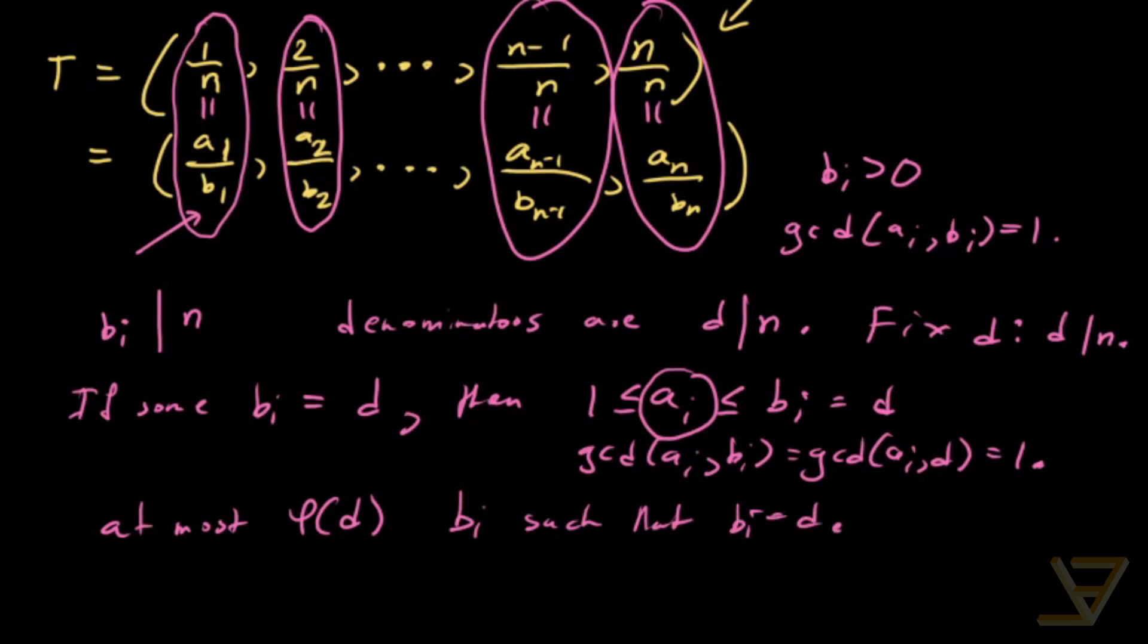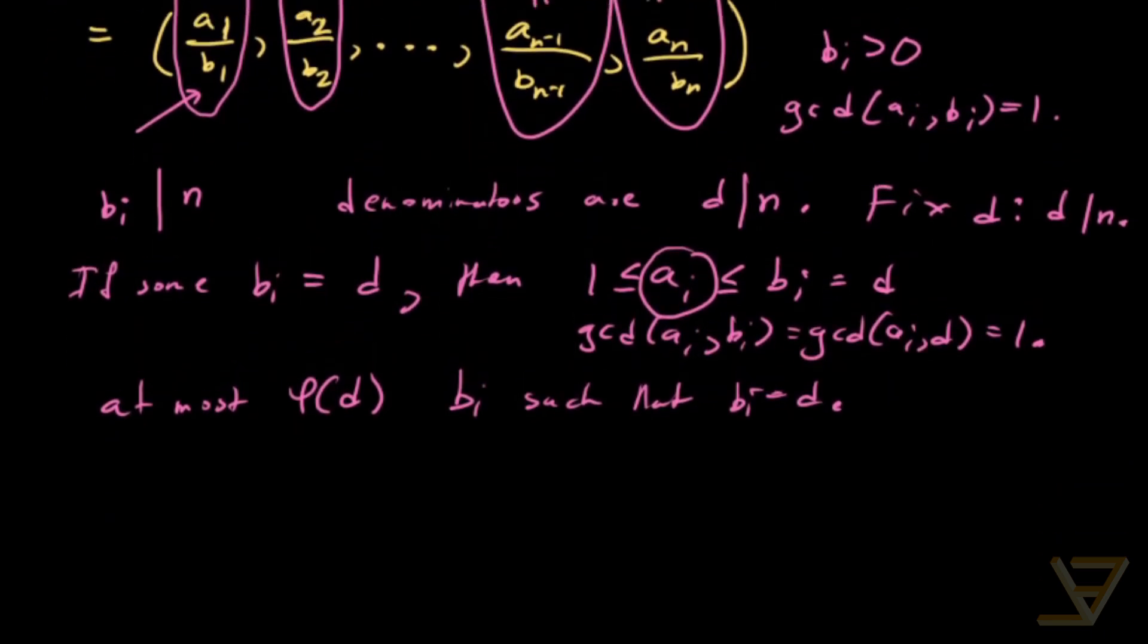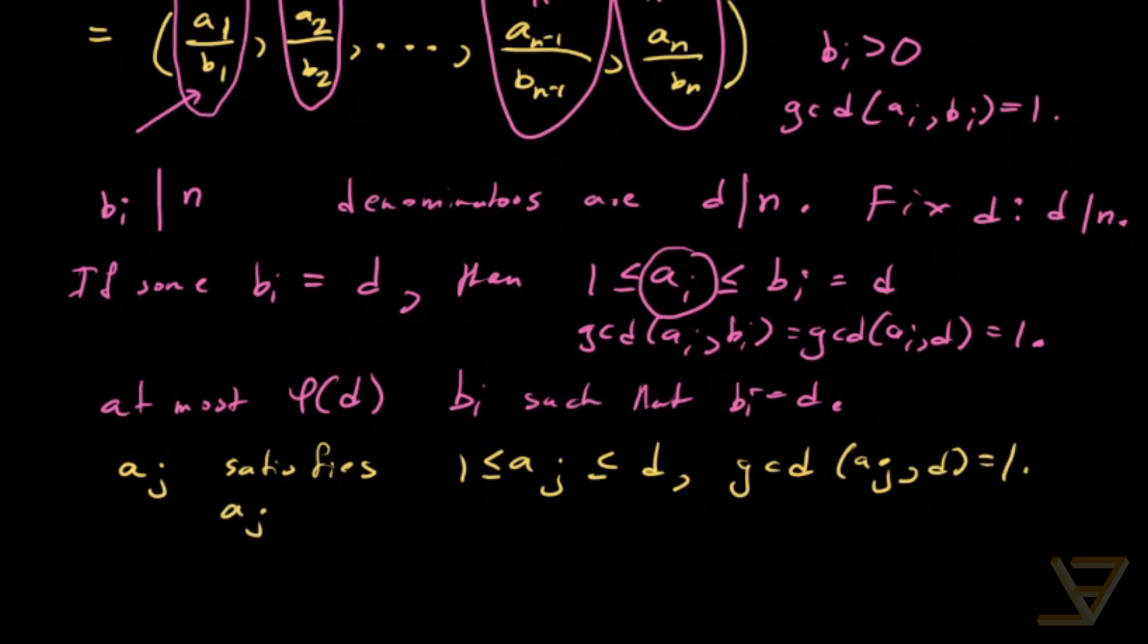What I'm going to show next is that there's also at least that many. And the reason is that since we fix d, let's say aj satisfies aj is between 1 and d and GCD of aj and d is equal to 1. Then aj over d is equal to aj times n over d over n.